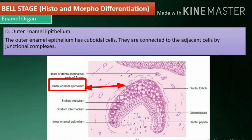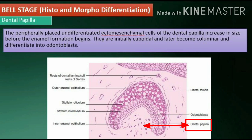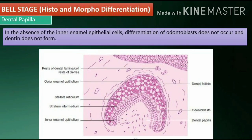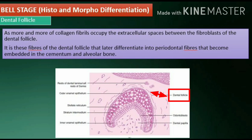Outer enamel epithelium: The outer enamel epithelium has cuboidal cells connected to adjacent cells by junctional complexes. Dental papilla: The peripherally placed undifferentiated ectomesenchymal cells of the dental papilla increase in size before enamel formation begins. They are initially cuboidal and later become columnar, differentiating into odontoblasts. In the absence of inner enamel epithelial cells, differentiation of odontoblasts does not occur and dentin does not form. Dental follicle: As collagen fibrils occupy the extracellular spaces between the fibroblasts of the dental follicle, these fibers later differentiate into periodontal fibers that become embedded in the cementum and alveolar bone.